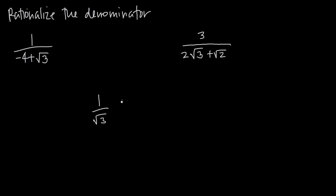The way that we did that was we multiplied by root 3 over root 3. We took the square root from the denominator and multiplied that by the numerator and the denominator. Then when we multiply across, we get 1 times the square root of 3 in the numerator, which is square root of 3. And in the denominator, we got square root of 3 times square root of 3, which is 3.